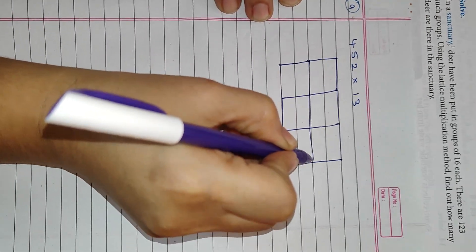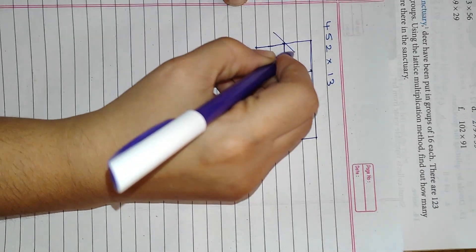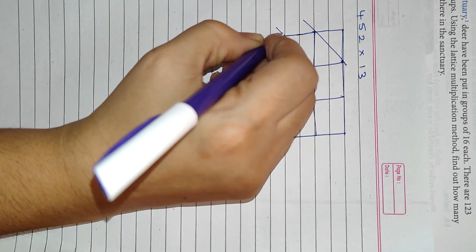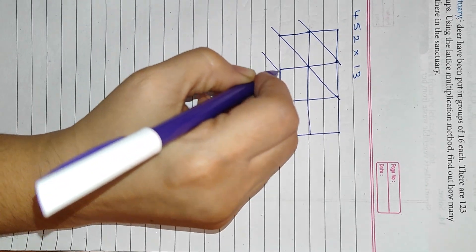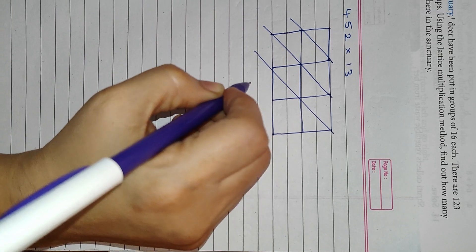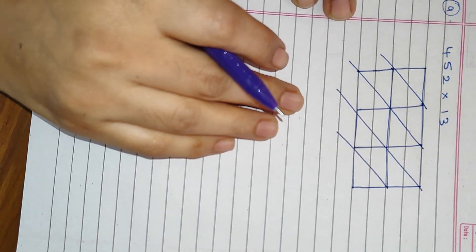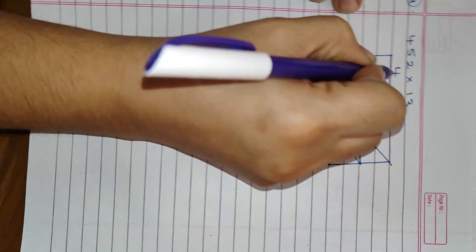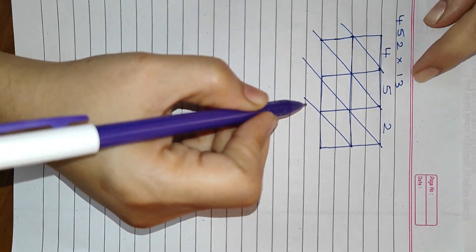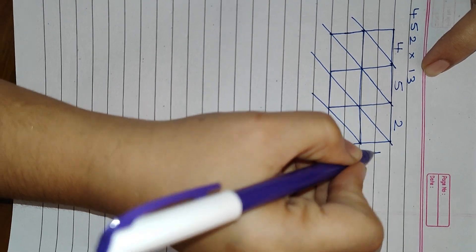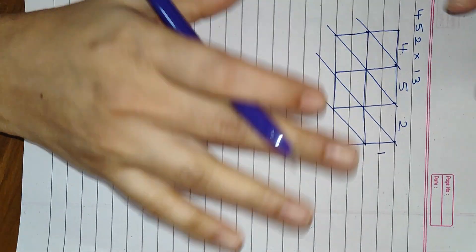And then because it is division by two only, two rows. Okay, then I am going to draw slant lines like this, according to the diagonal. I hope you all will understand very well the way I explained. You will not have any confusion. So 452 multiplied by 13. So 1 comes here, 3 comes here.